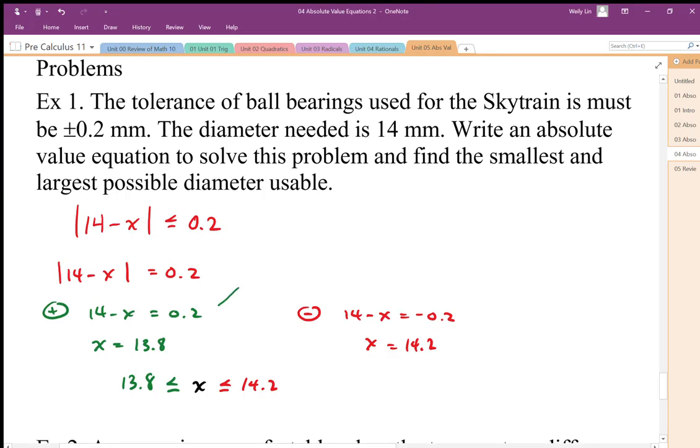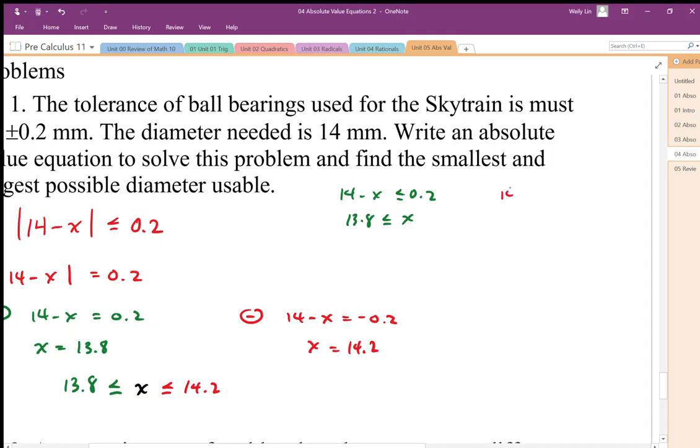I'll do it alternatively here. 14 minus x is going to be less than or equal to 0.2. When I solve for x, I get 13.8 here, and x on this side. And if you want to do the negative version, we need to flip the inequality. And then we solve for this, we get 14.2. So x is going to be less than 14.2, so that's how I get x is less than 14.2 over here.